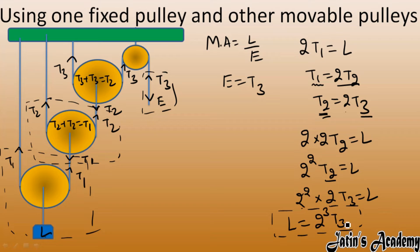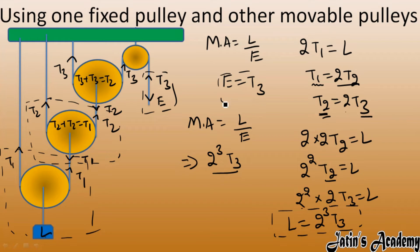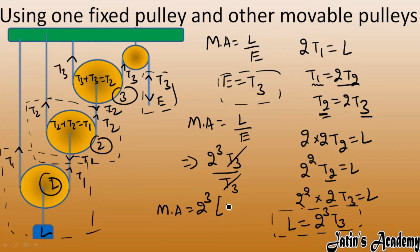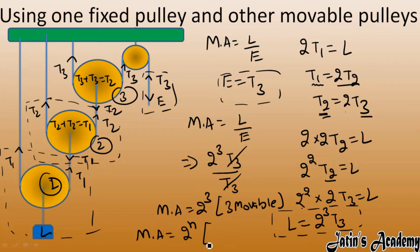Mechanical advantage = Load / Effort = (2³ × T3) / T3 = 2³. The T3 terms cancel out. We have 3 movable pulleys — first, second, and third — each contributing a velocity ratio of 2, so they multiply together to give 2³. For n movable pulleys, the mechanical advantage is 2 raised to the power n.